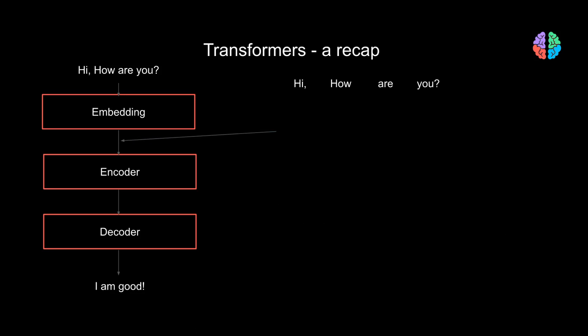The embedding layer first converts each input word into some form of numeric representation as fixed-size vectors. We then add positional information for each vector. If we do not provide the positional information, the transformer has no means to understand what comes first and what follows it. The encoder takes these vectors as input.